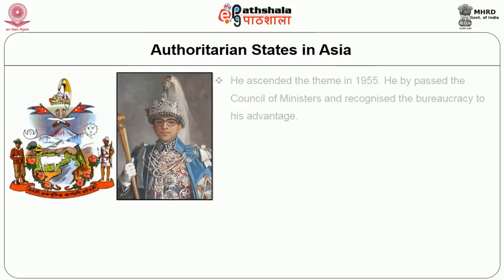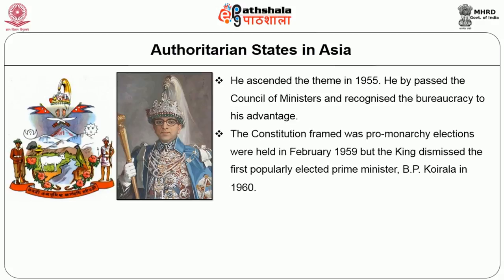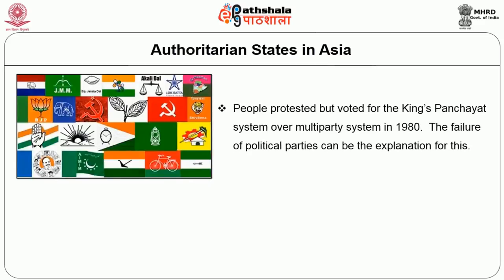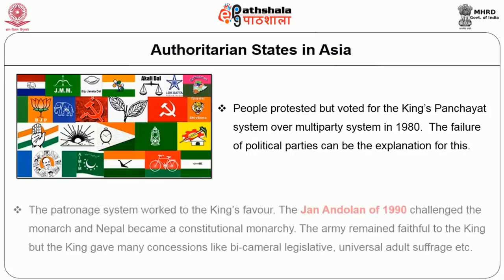Nepal has a monarchical form of government. When King Mahendra ascended the throne in 1955, he bypassed the council of ministers and reorganized the bureaucracy to his advantage. The constitution framed was pro-monarchy; elections were held in February 1959, but the king dismissed the first popularly elected prime minister, B.P. Koirala, in 1960 and officially banned political opposition. King Mahendra's death in 1972 led his son, King Birendra, to organize the Back to the Village national campaign to control local parties. People protested but voted for the king's Panchayat system over the multi-party system in 1980. The Jan Andolan of 1990 challenged the monarch and Nepal became a constitutional monarchy.